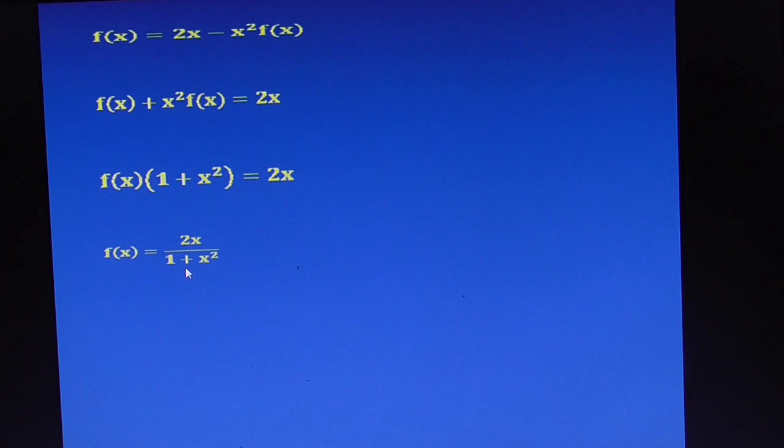By using this, you have to calculate f(1/2). For this, in place of x, substitute x equals 1/2. Simplify: 2 and 2 cancel, it is 1. This is 1/4, 1 plus 1/4. 4 is the LCM, 4 plus 1 is 5. Therefore 1 divided by 5/4, that is 4/5. The answer is 4/5, option number 3.